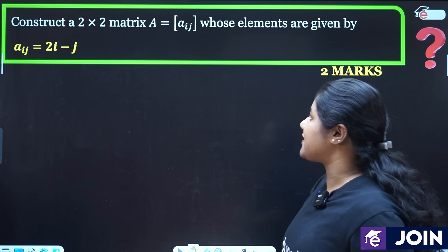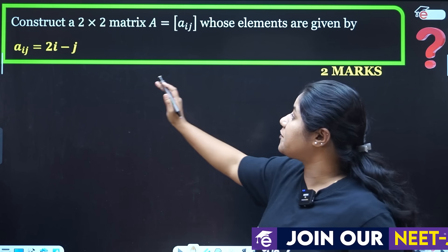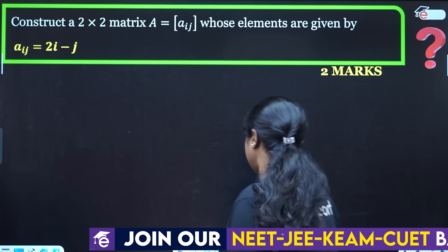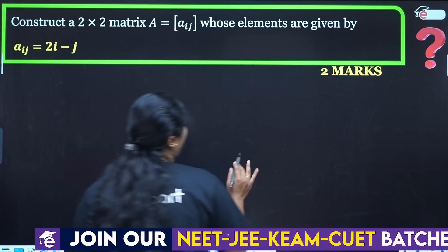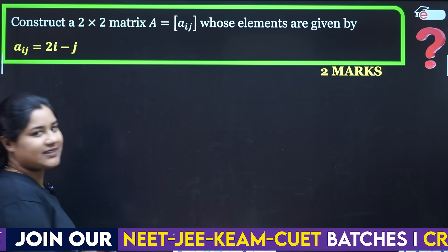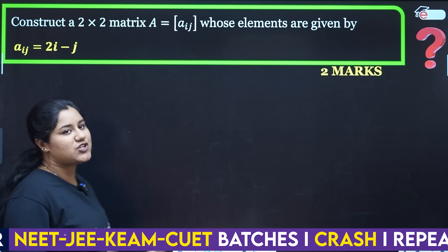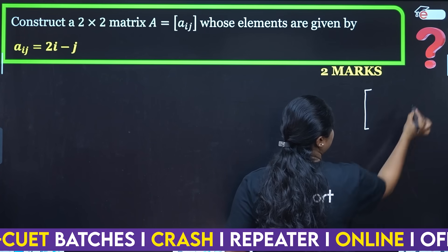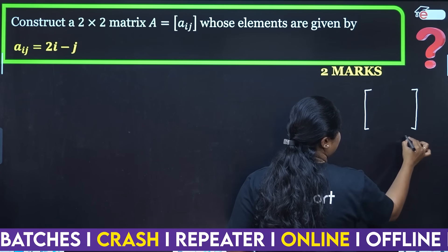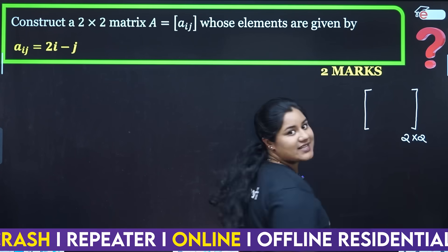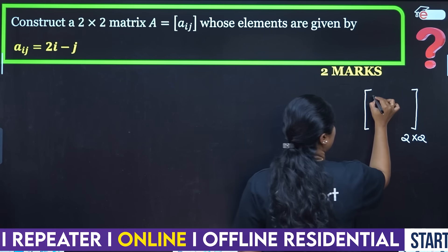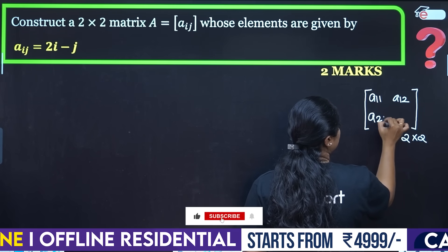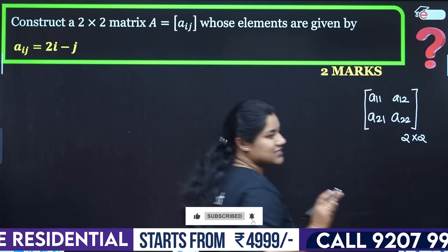Construct a two-by-two matrix A, whose elements are given by aij equal to 2i minus j. So this is a general form. Let's look at the two-by-two matrix — there are two columns and rows. So we have a11, a12, a21, a22. This is how we find the matrix.